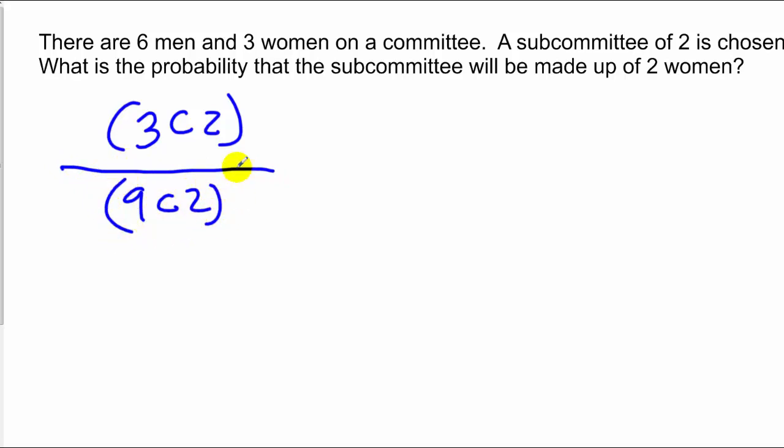So we're going to take three, choose two, and that's going to be the likelihood of drawing two women over nine, choose two, which is all the possible outcomes that can occur. However, we can plug this into our calculator to get an answer. This gives us three over 36, or a 1 12th probability.